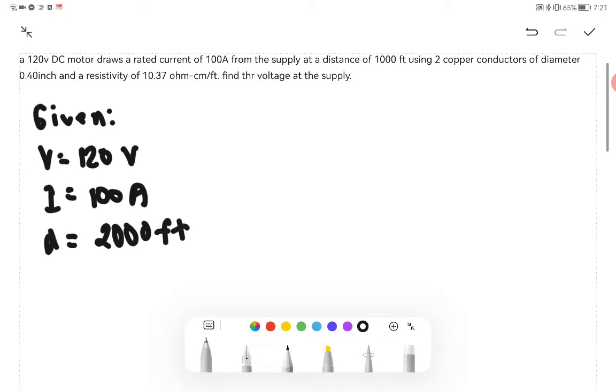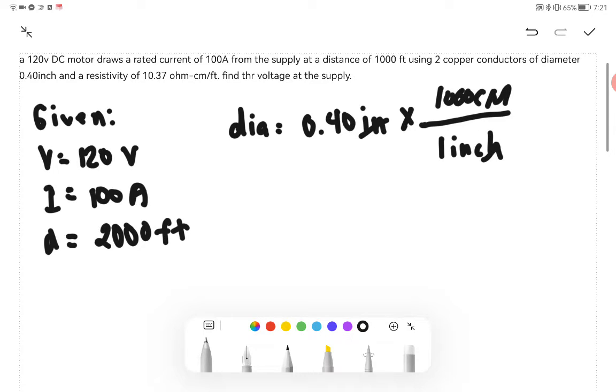Also we are given the diameter of 0.40 inch that needed to be converted into circular mils. We multiply this with one inch equals to a thousand circular mils, so we have 0.40 multiplied by a thousand, which gives us 400 circular mils.